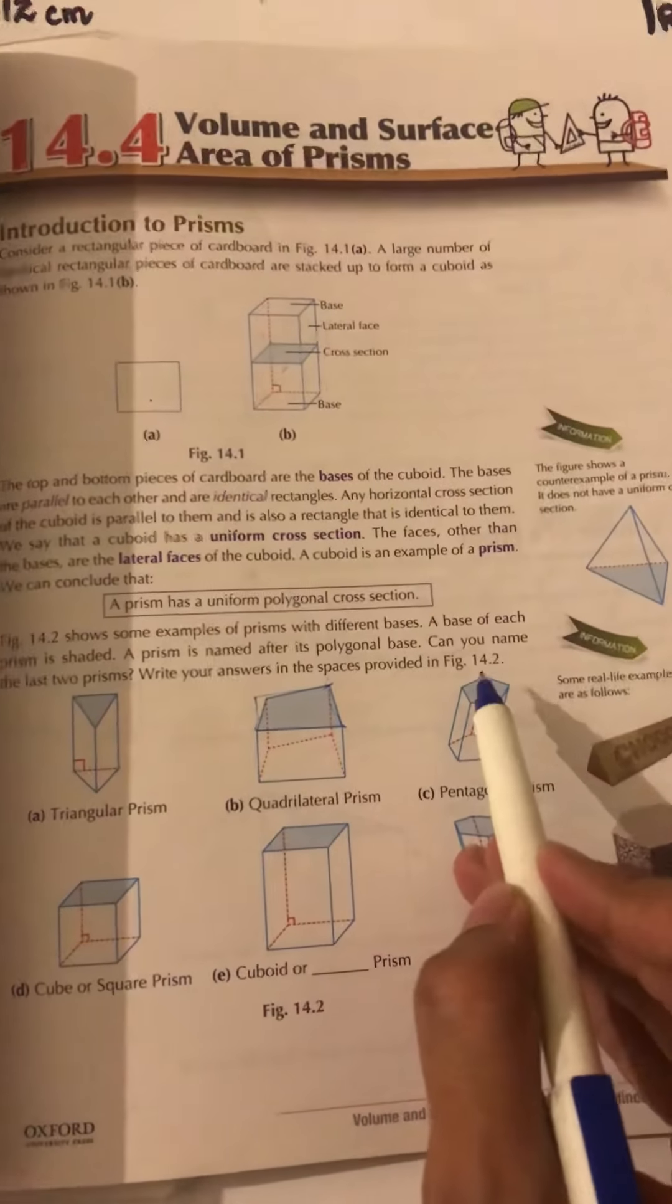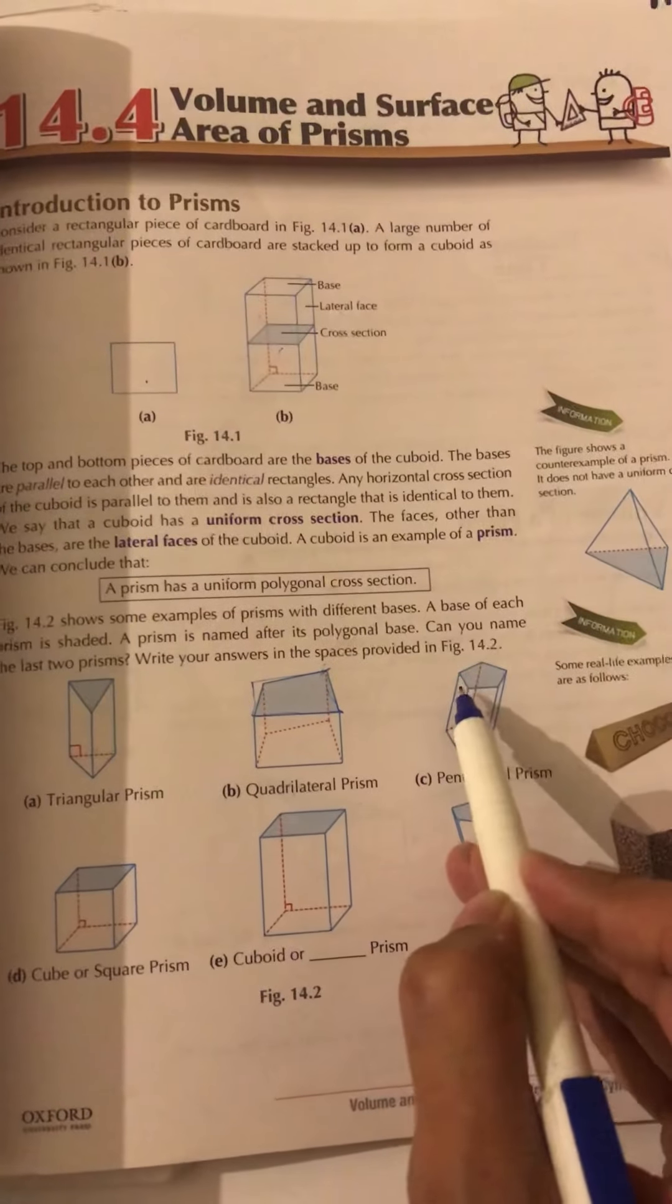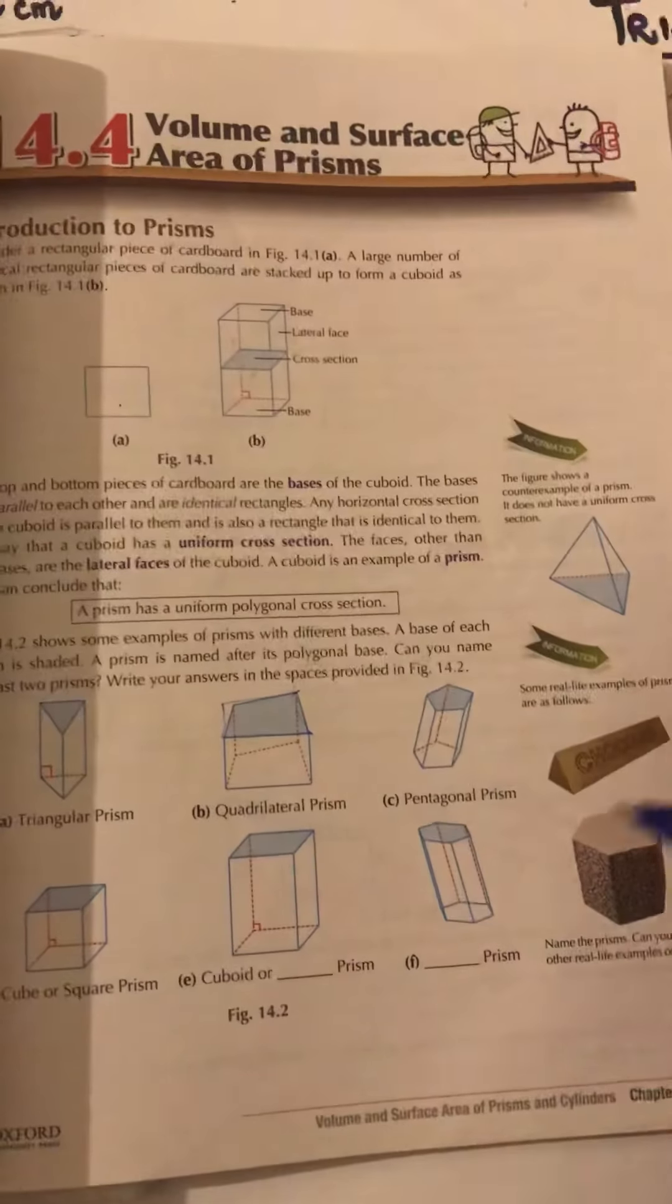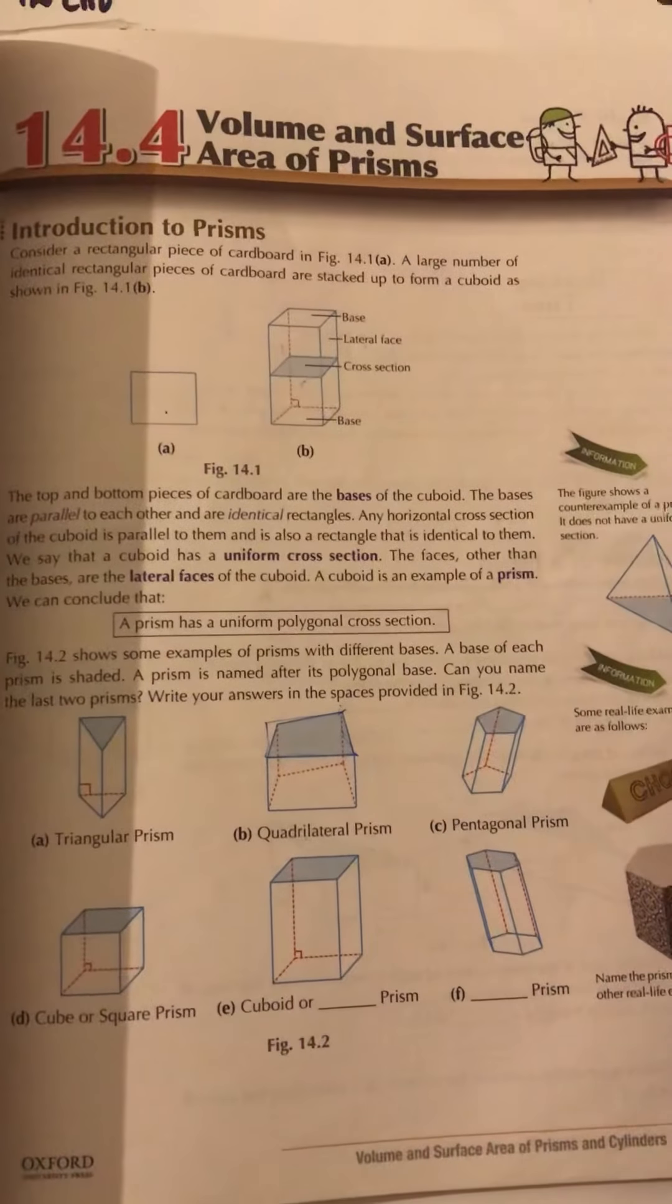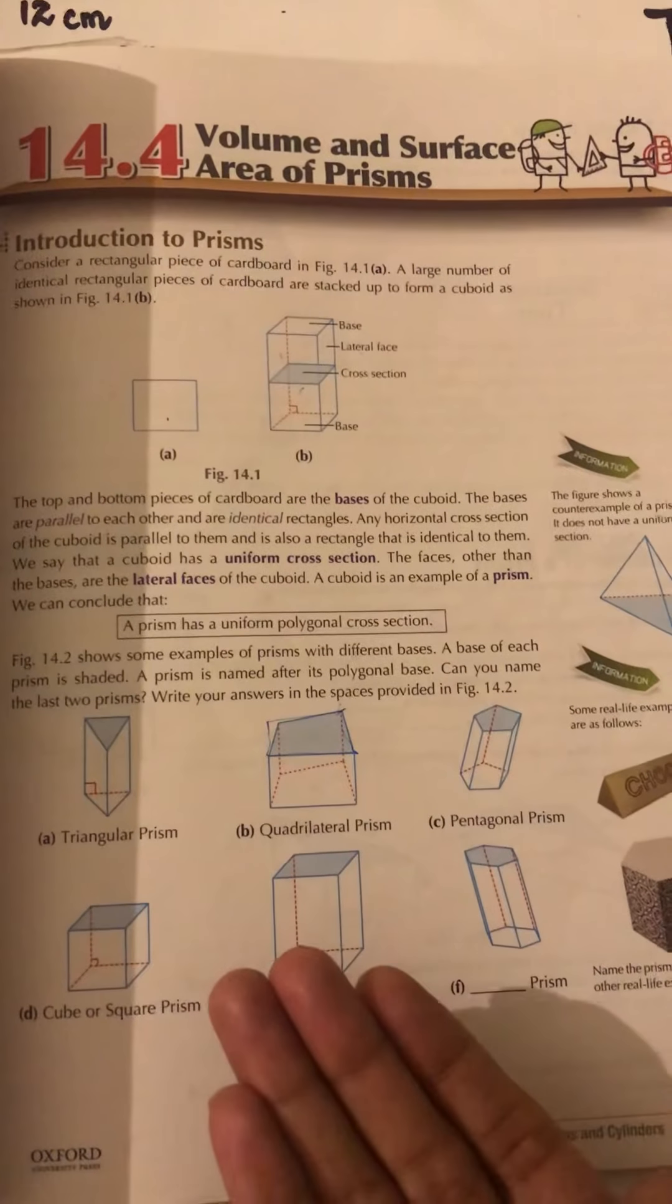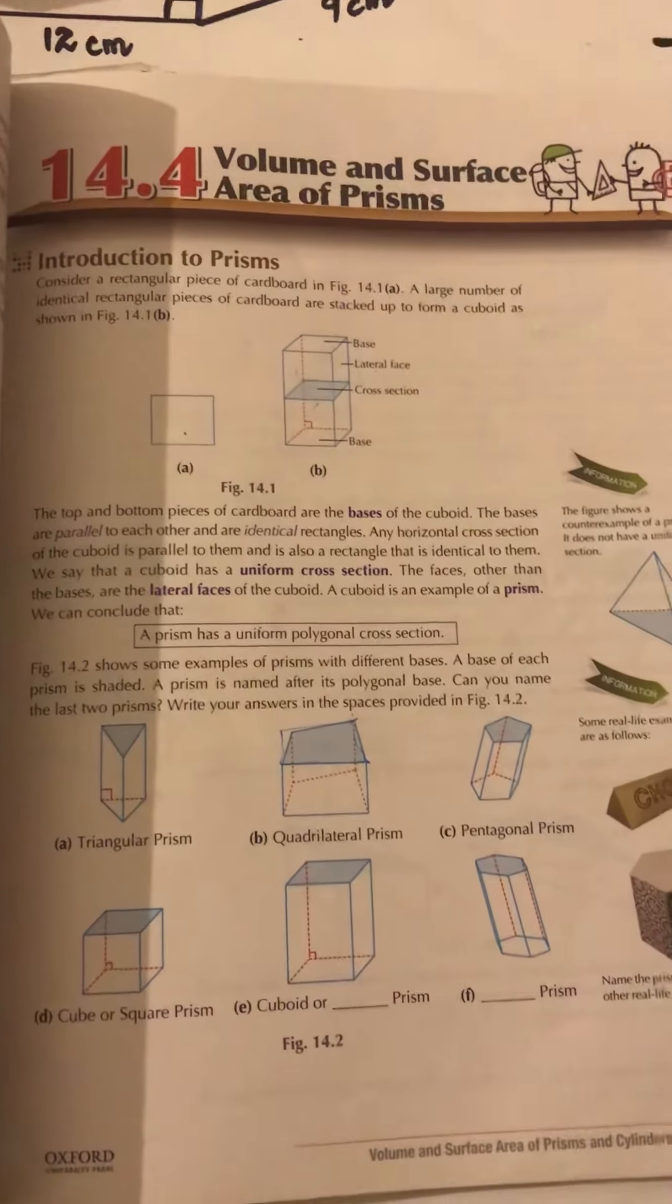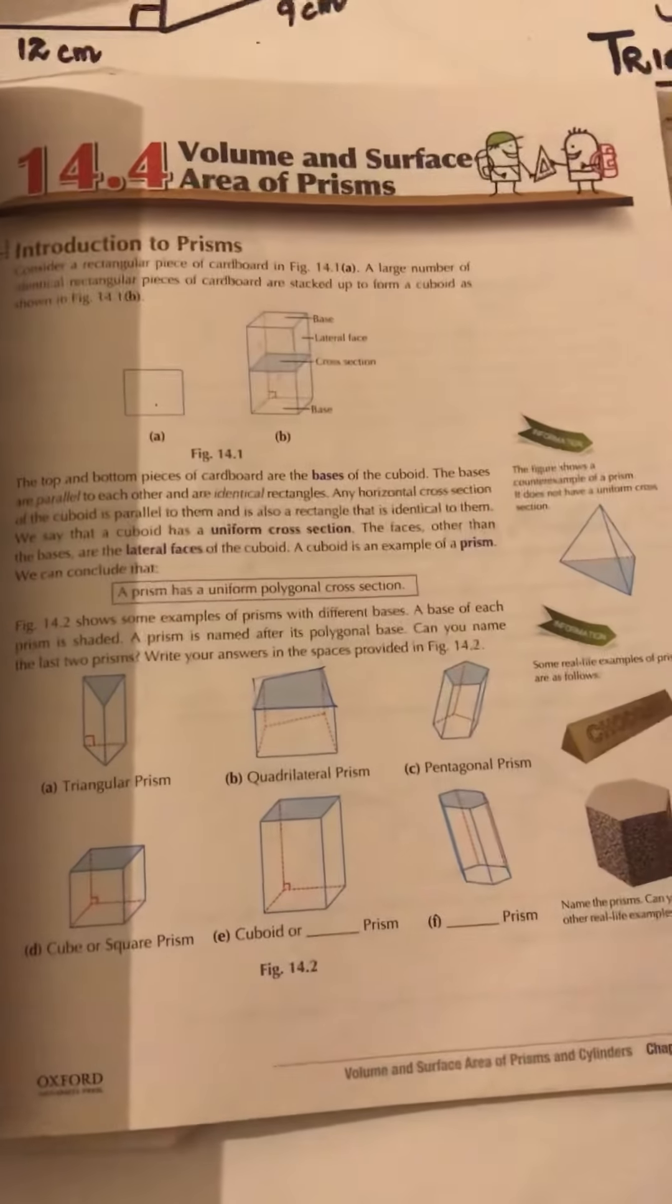Pentagonal prism - what does that mean? That the base of this prism is pentagon. And if you will cut or have a cross section of this pentagonal prism, the shape that will appear will be uniform and it will be same as pentagon.